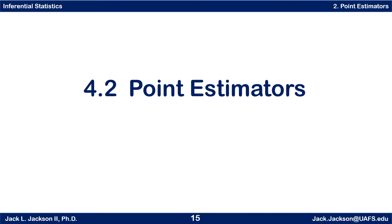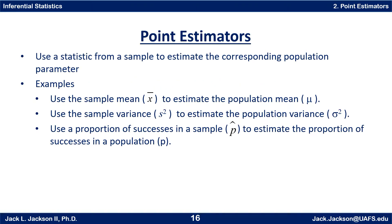We are back with our second video in this playlist on inferential statistics. In this video we'll be discussing point estimators. Point estimators use a statistic from a sample to estimate the corresponding population parameter. Some examples include using the sample mean x-bar to estimate the population mean mu, using the sample variance s-squared to estimate the population variance sigma-squared, and using the proportion of successes in a sample p-hat to estimate the proportion of successes in a population p.